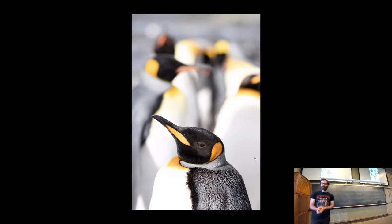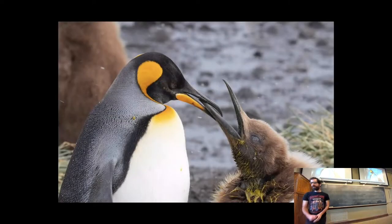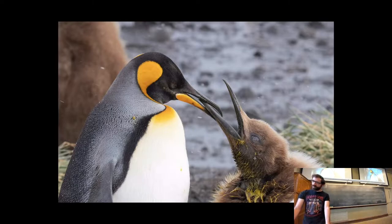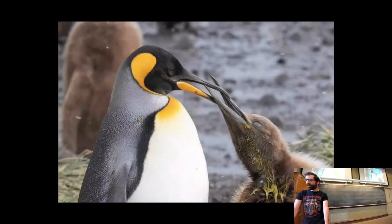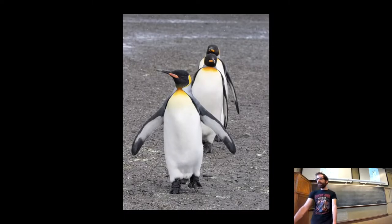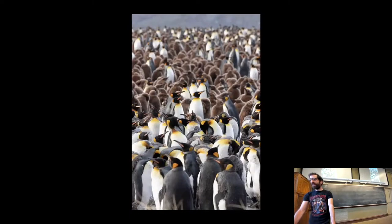The babies and juveniles are brown and rather odd-looking. This one is begging for food from a parent. Here's another picture of some juveniles — just a bit awkward-looking. Here's a royal procession of king penguins; they do kind of crowd together in these large colonies.